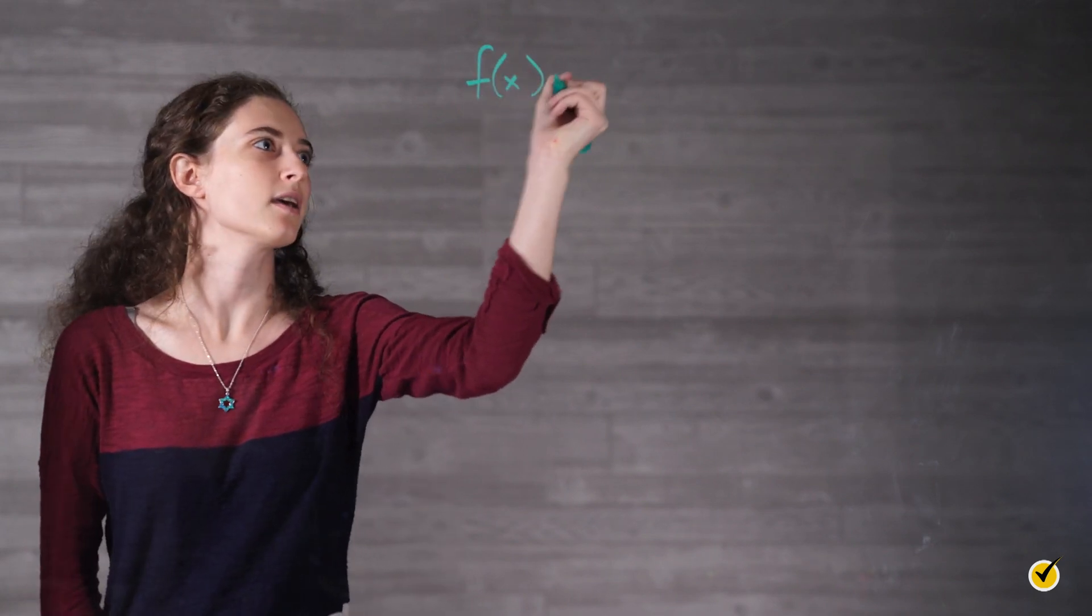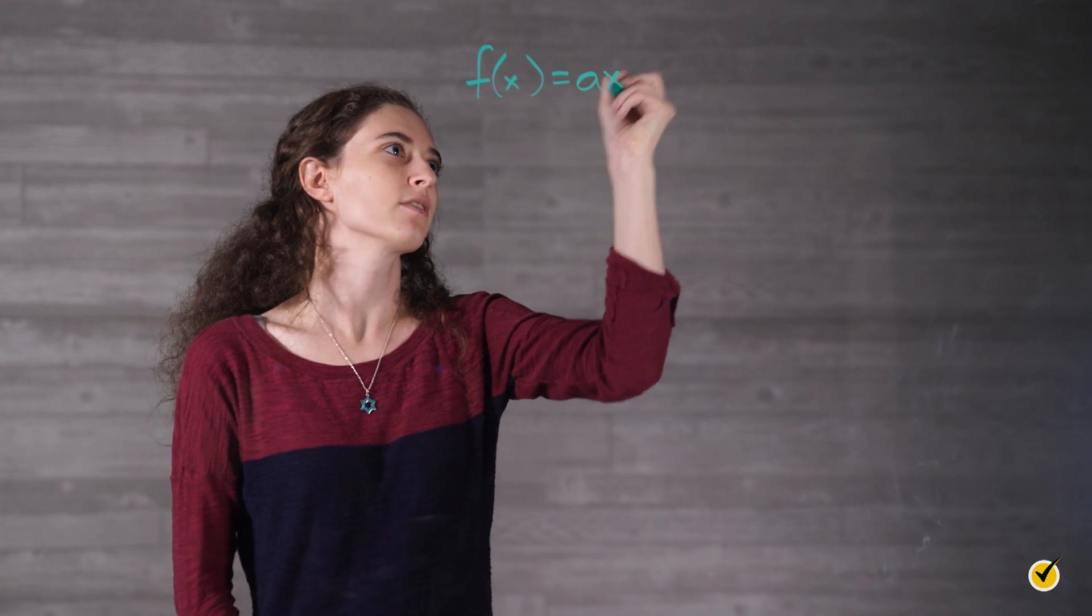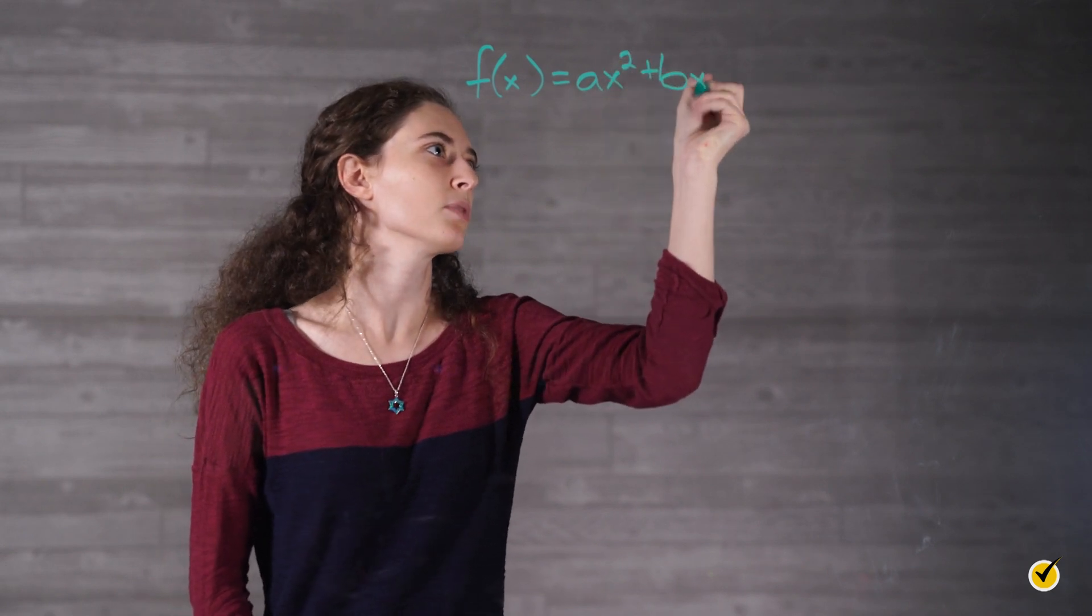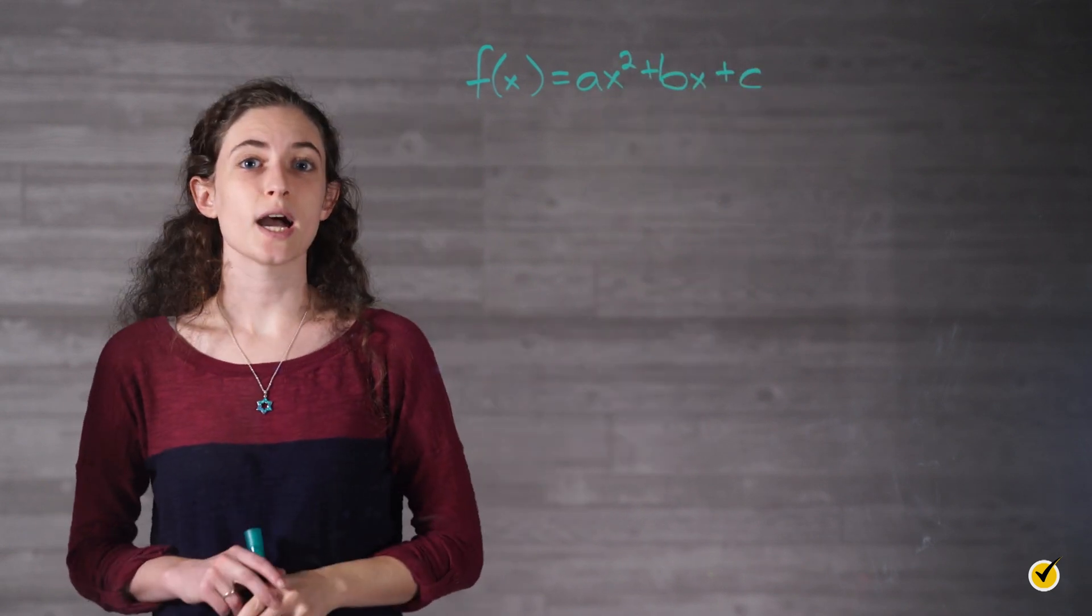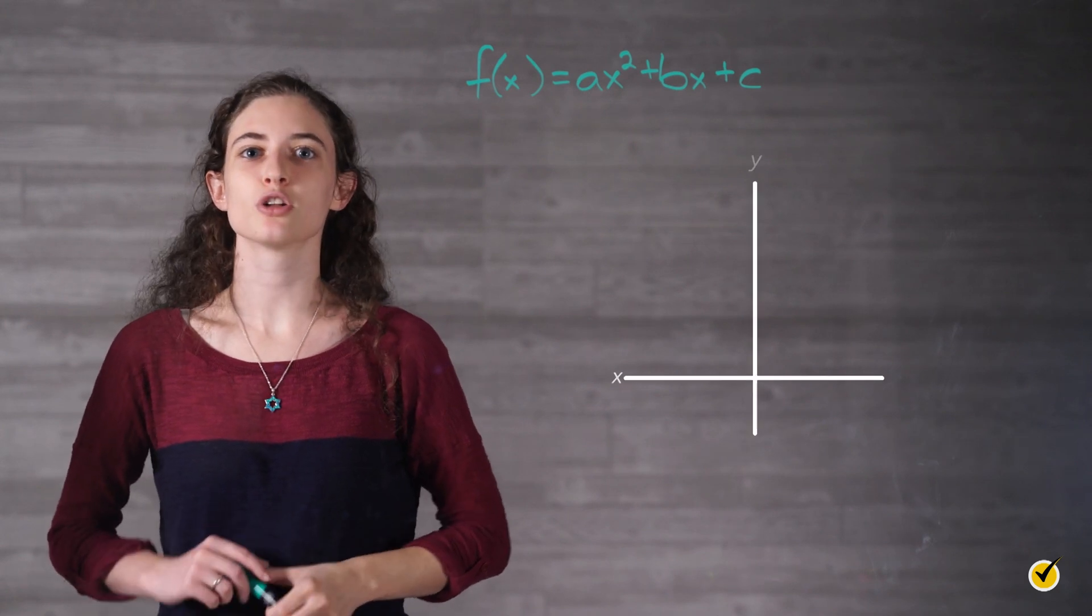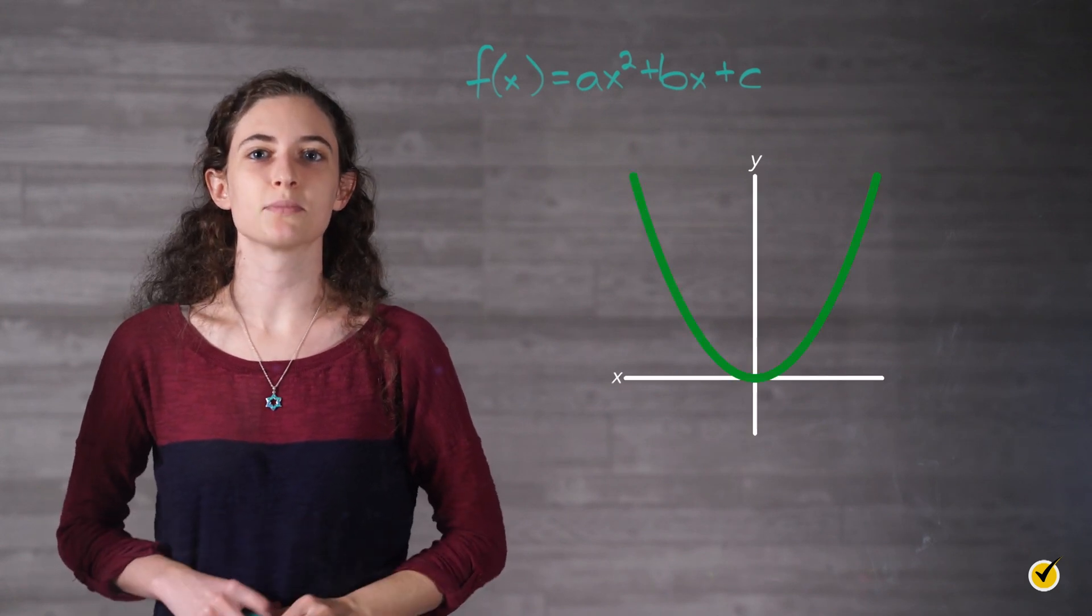Equations for these functions generally look like this: f of x, or sometimes y, equals ax squared plus bx plus c. Their graphs form a characteristic shape called a parabola, which looks something like this one.